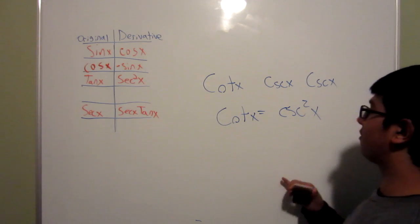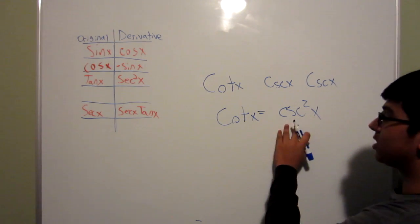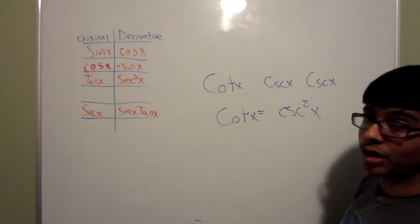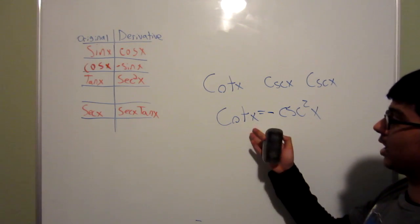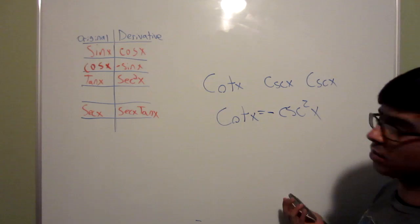And like I said before, if it has to do with sine, which cosecant is a form of sine, it is automatically put into negative. So it's cotangent x equals negative cosecant squared x.